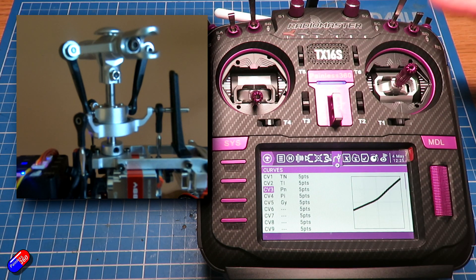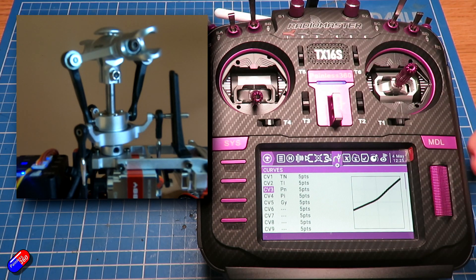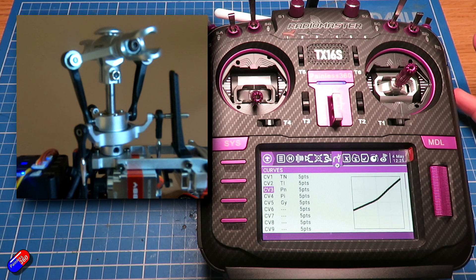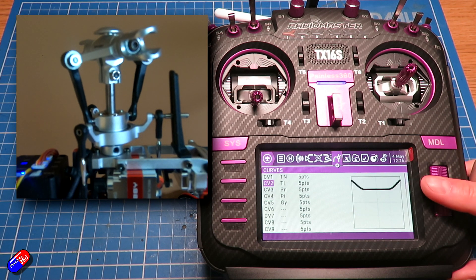Now in idle up, again we need to make sure we have the throttle cut set. Let's put it in idle up mode. Idle up mode or 3D mode uses a slightly different throttle and pitch curve. So the idle up throttle looks like this.